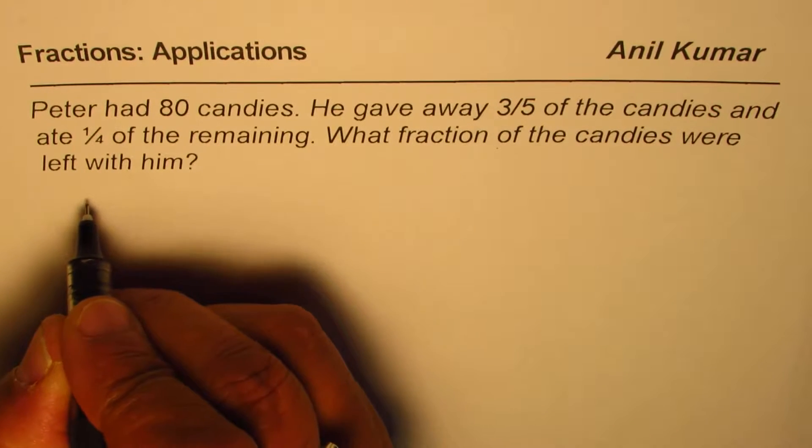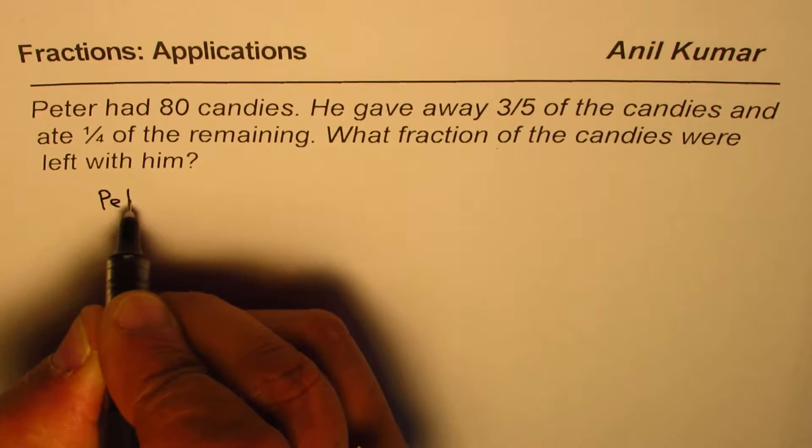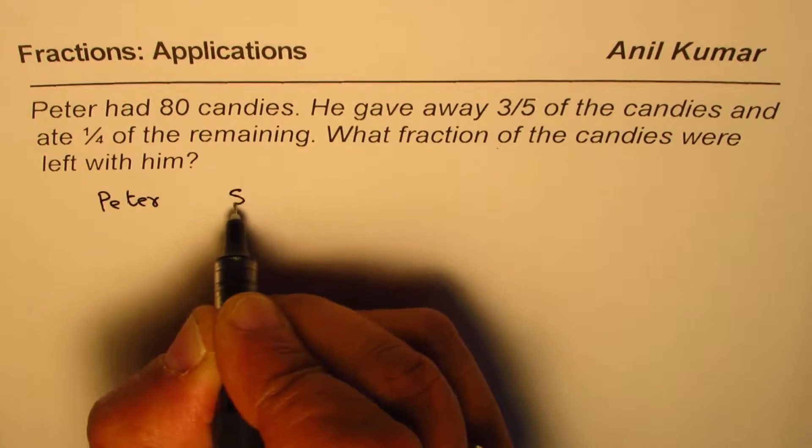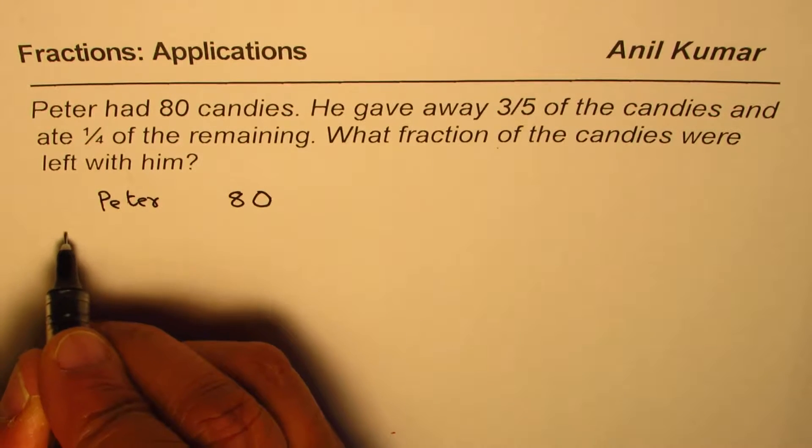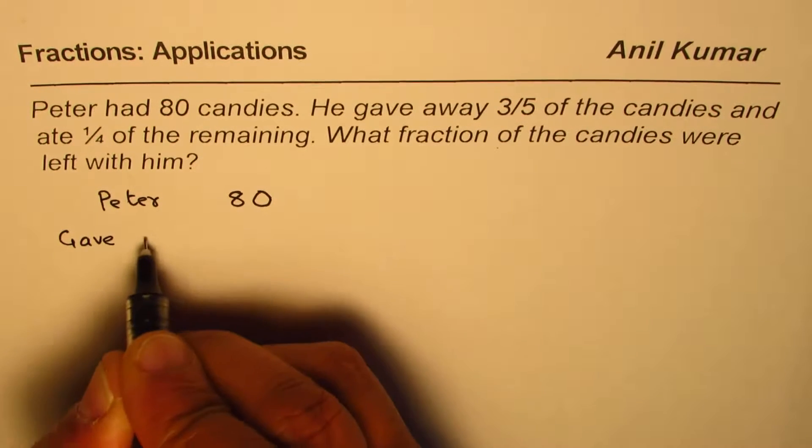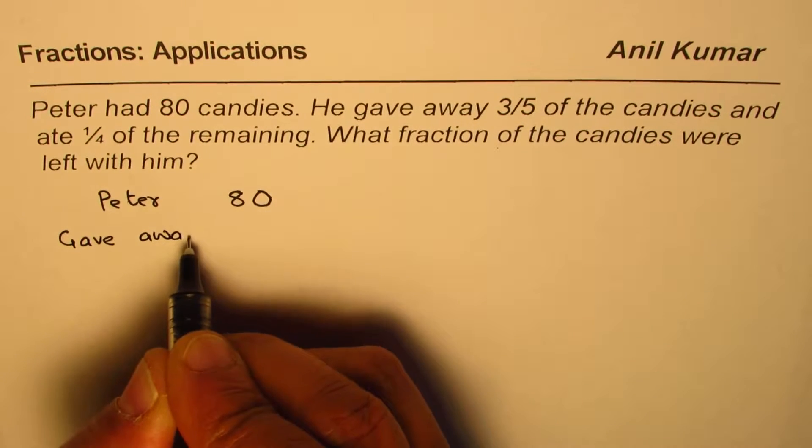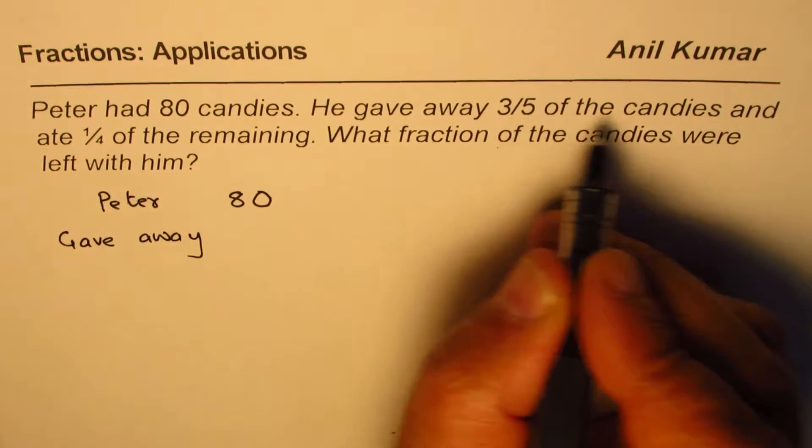Okay, so let's start. To start with, Peter had how many? Peter had 80 candies. Then he gave away 3/5 of the candies.